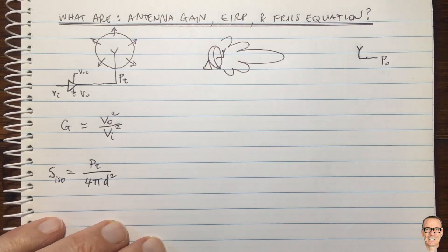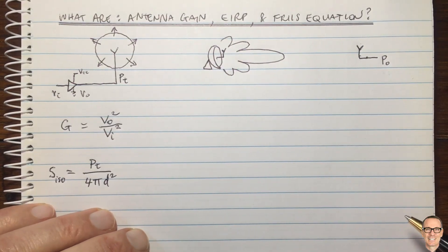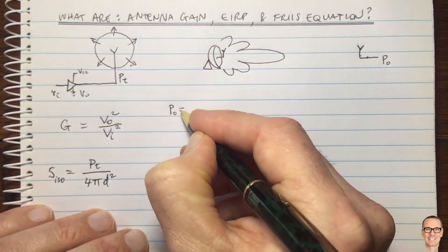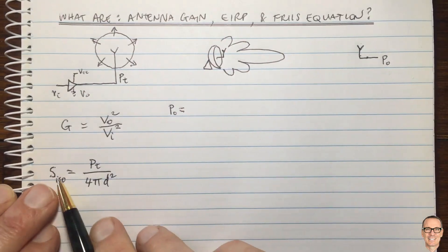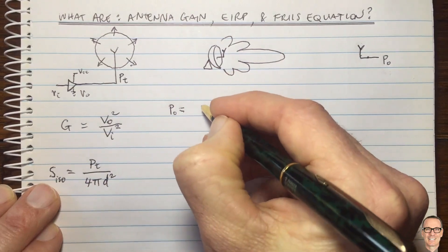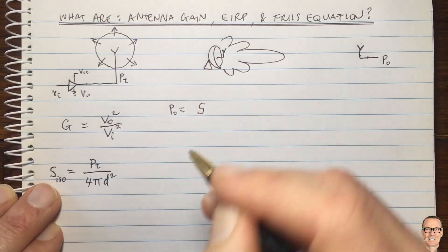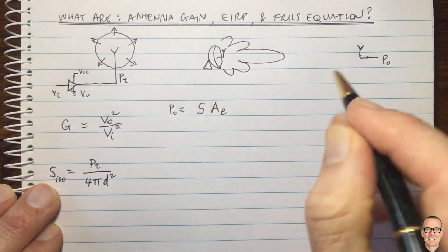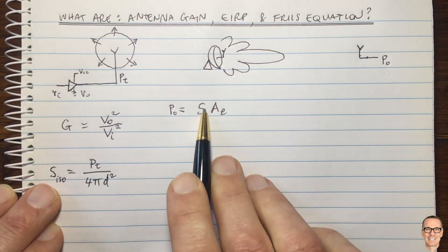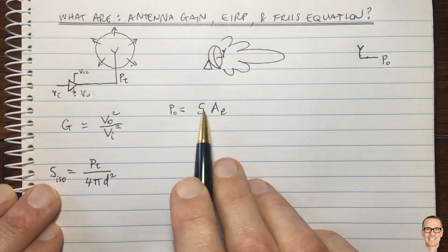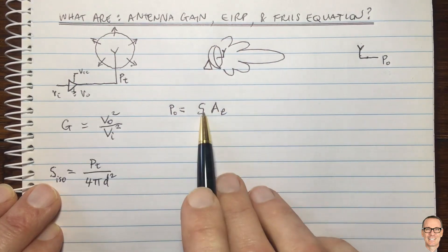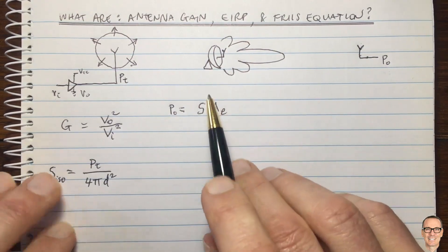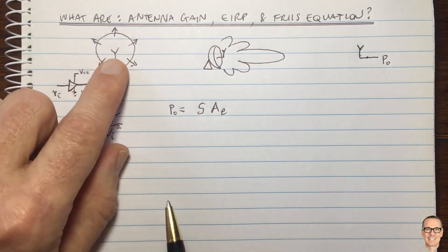We can characterize the output power by a thing called effective area. The power output equals the power density S hitting onto that antenna times the effective area of the receiver: PO = S × Ae. A density times an area gives a power, so the units make sense. To understand effective area, let's start by thinking about the isotropic case.